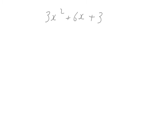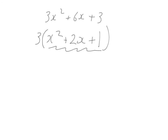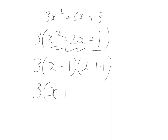Factorize 3x squared plus 6x plus 3. This looks longer, but remember to always look for a highest common factor first. There is one — it's 3. That gives 3 bracket x squared plus 2x plus 1. Now factorize the trinomial inside: two numbers multiplying to give 1 and adding to give 2 — that's 1 and 1, giving (x + 1)(x + 1). Don't forget the 3 at the side. We can shorten that to 3(x + 1) squared. That's the final answer.